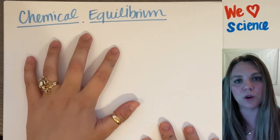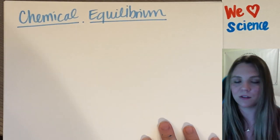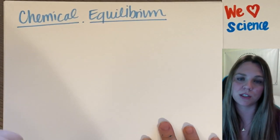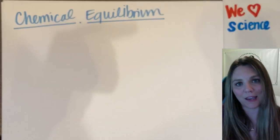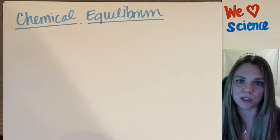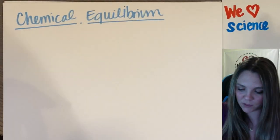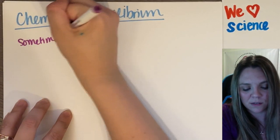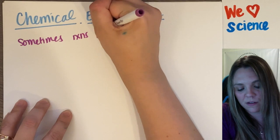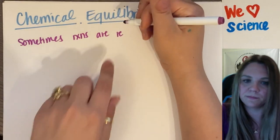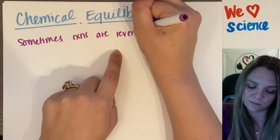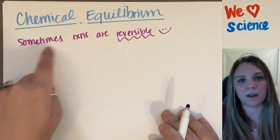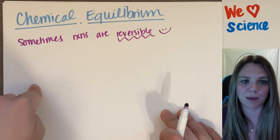That's not true all the time. Sometimes I have what's called chemical equilibrium. I have a reaction that can do the forward and the reverse reaction. So chemical equilibrium means sometimes reactions are reversible. I have the forward reaction, and I have the reverse reaction happening.